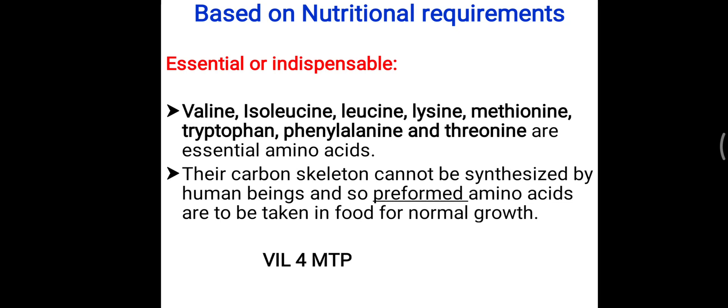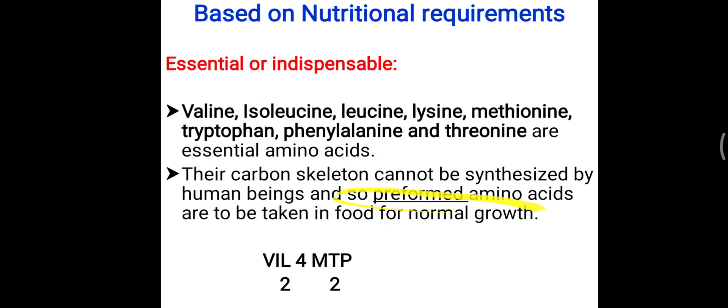To remember the essential amino acids, use the mnemonic VIL MTP: V-I-L stands for valine, isoleucine, and leucine; then lysine; M for methionine; T two times for tryptophan and threonine (remember it is tryptophan, not tyrosine); and P for proline. These total eight amino acids are the most essential and must be taken as ready-made or pre-formed in our body.